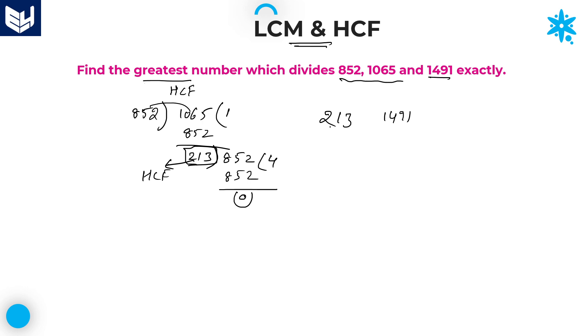Do the HCF of these two numbers. Same process. Divide greatest number with smallest number. 213 seven, 1491. Reminder is zero. Here you are getting the remainder while taking the number 213 as divisor. Therefore, 213 is the HCF of all the three numbers. That is the answer. Let us move on to the next question.